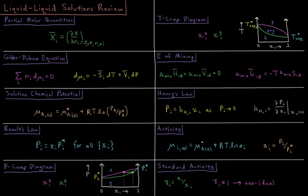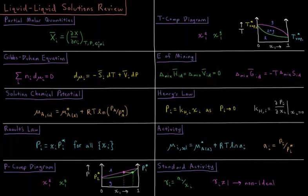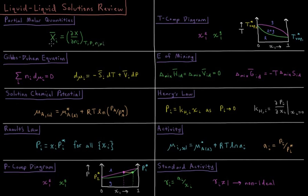That would be at constant temperature, pressure, and number of moles of all of the other substances in a mixture. So this includes things like entropy, enthalpy, Gibbs energy, volume, all those types of things.